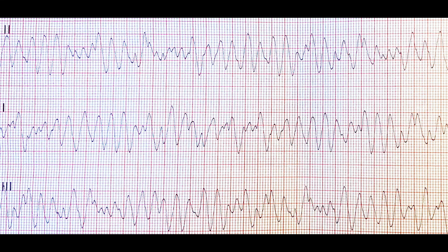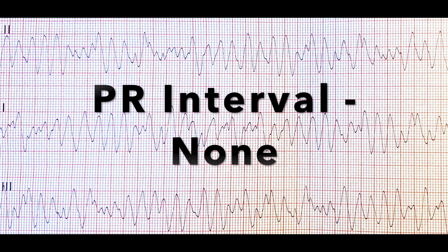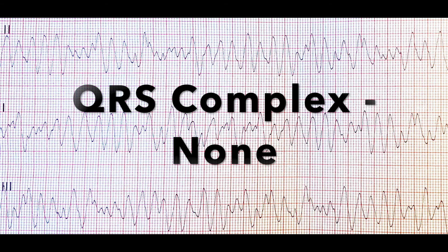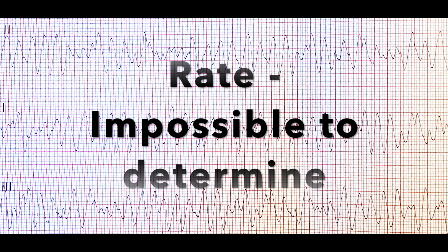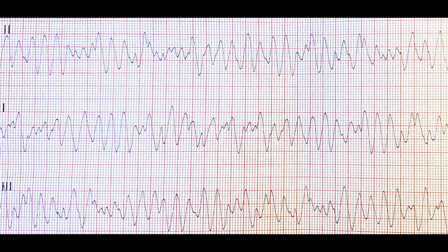Looking at our PR interval — there is none. Moving on to the QRS complex — there is also none. Calculating our rate is impossible to determine. All of this information, in conjunction with the ugly rhythm on the strip, constitutes ventricular fibrillation.